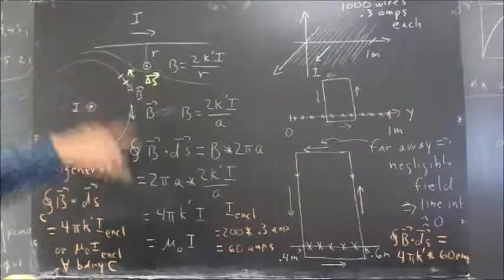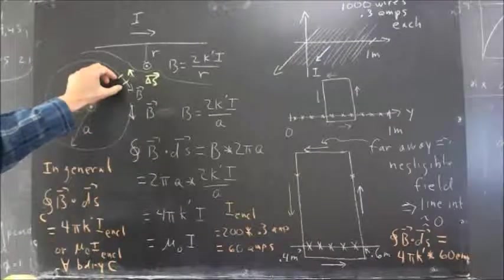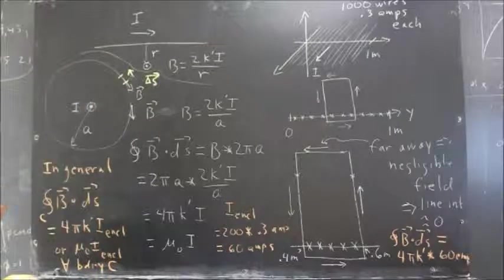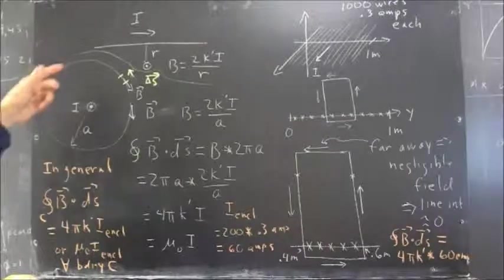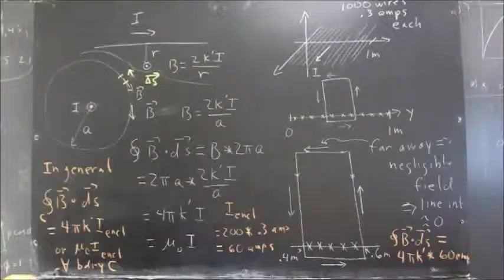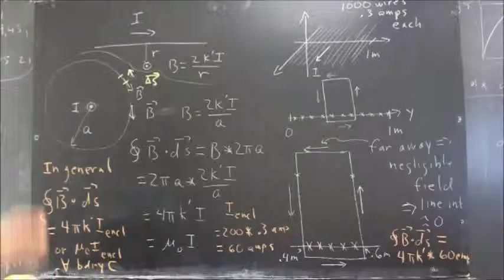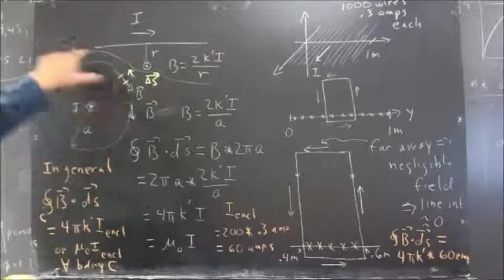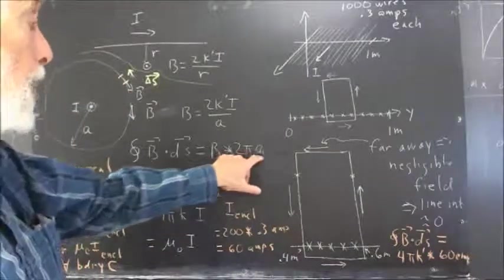So this integral is going to have, for every segment, magnitude of B delta S. As in the example we did before, when we calculated the magnitude of the field at the central point, we can simply add up all the B delta S contributions around the circle. And that's going to give us a result of magnitude B times 2 pi A.